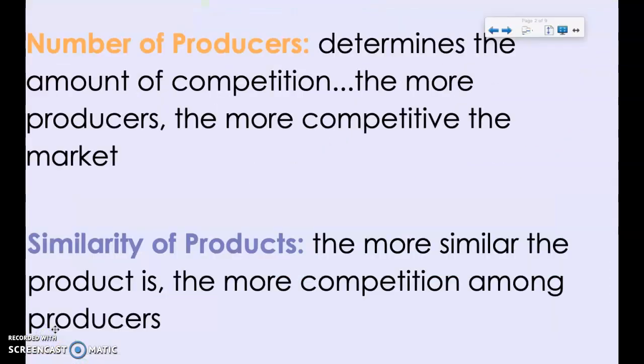By number of producers we mean the amount of competition. The number of producers is going to determine the amount of competition. The more producers there are in the market, the more competitive that market is. If you have a lot of producers making the same thing, that's a lot of competition. If only one company produces a product, that's not a lot of competition.